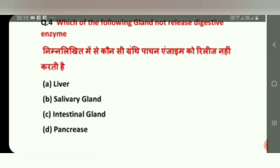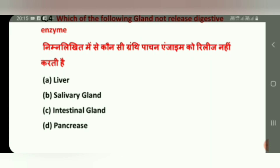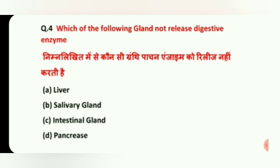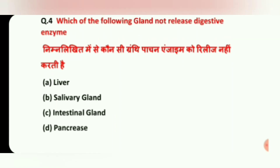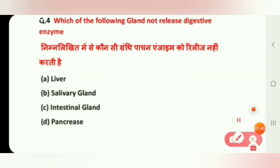Next question is: Which of the following glands does not release digestive enzymes? Options are: Liver, Salivary Gland, Intestine Gland, and Pancreas. The correct answer is Liver.